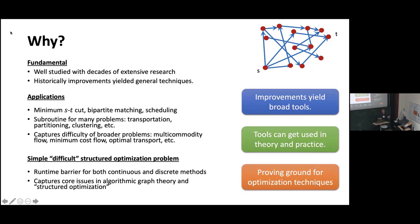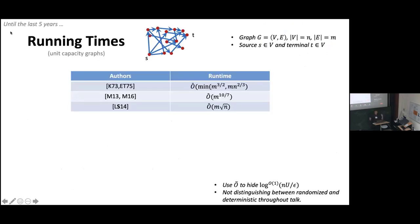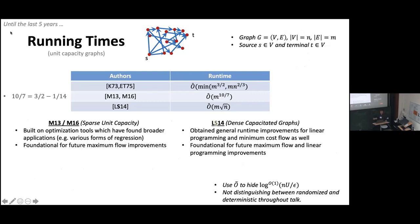Maximum flow has a nice proving ground for developing new algorithmic techniques, with a history of new techniques for the problem leading to broader utility. So what's the state of the art for solving the maximum flow problem on unit capacity graphs? There was a line of work culminating in results in the 70s of solving the problem in the better of M^(3/2) and M times N^(2/3).